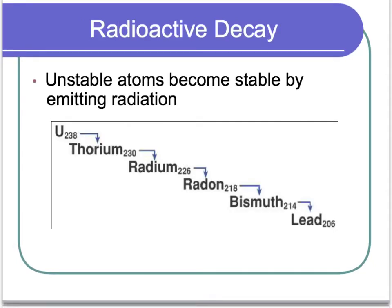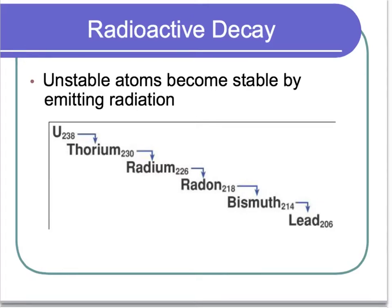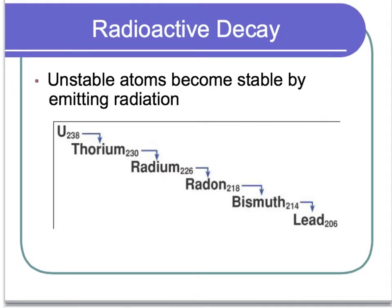Radioactive decay is the process by which unstable atoms become stable by emitting radiation. So as you can see in this example, we're starting with uranium. That's what U stands for. And as it goes through the radioactive decay process, it's actually becoming different elements. And you can see that their atomic number is getting smaller as you go down.